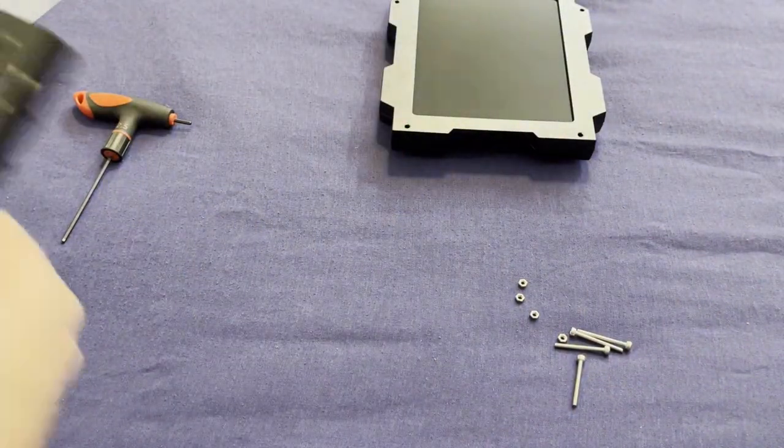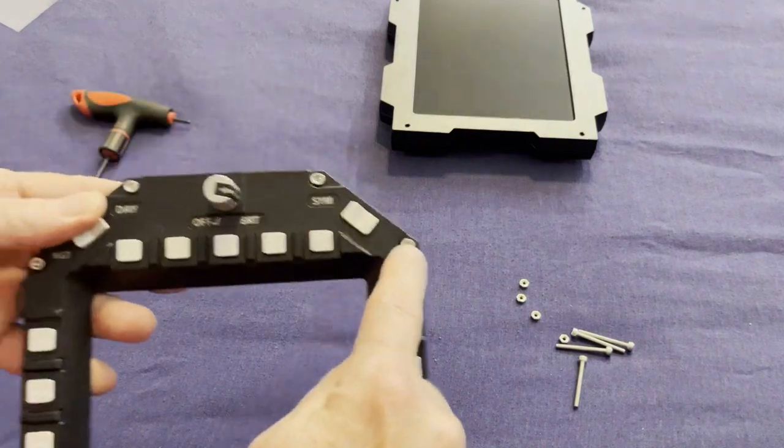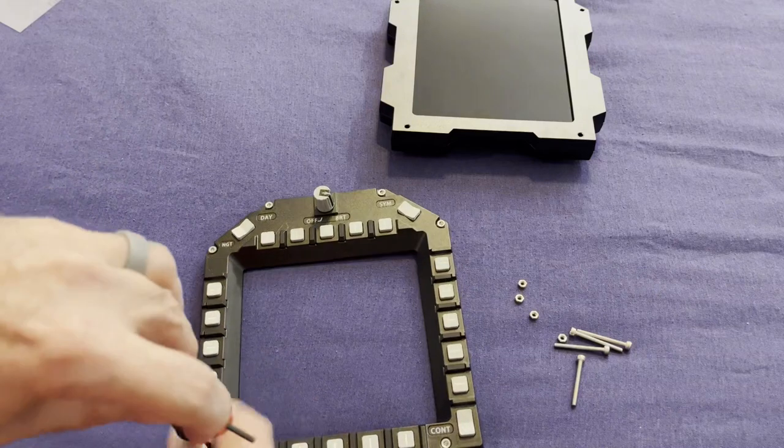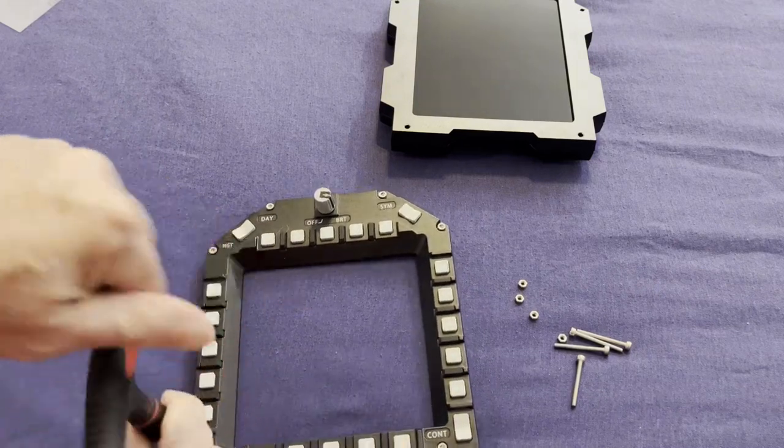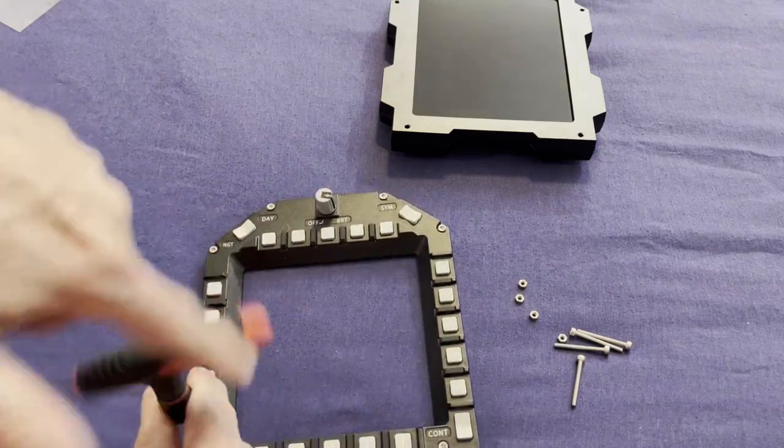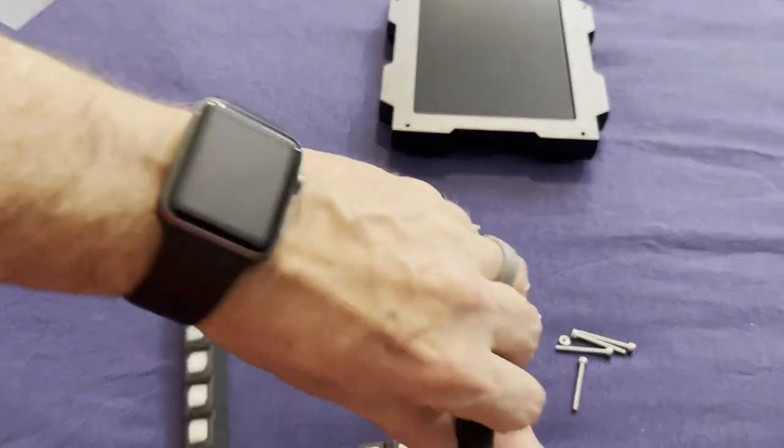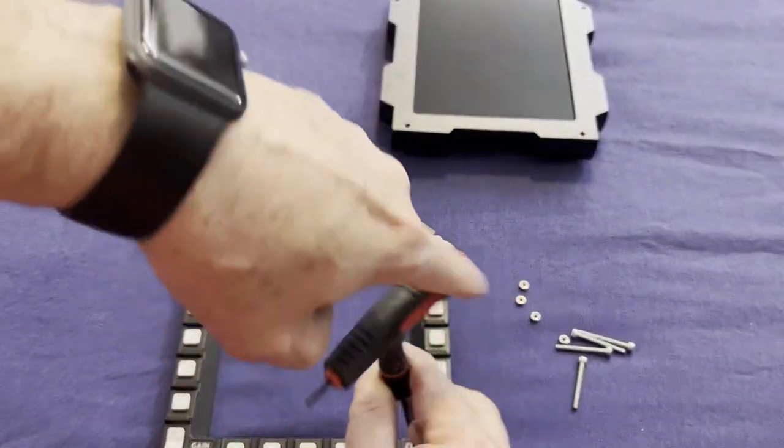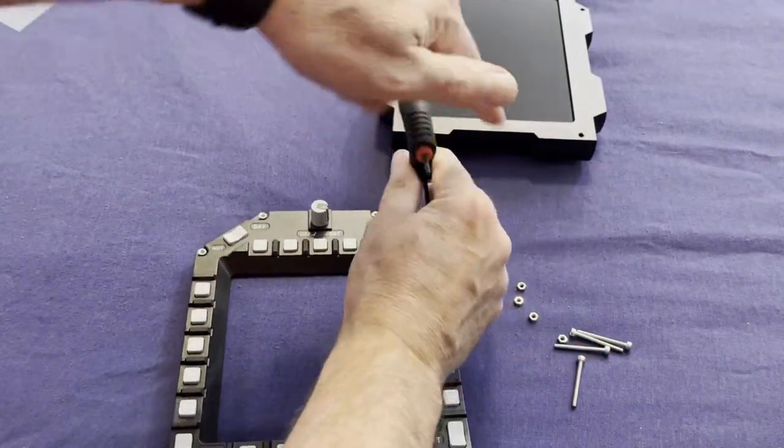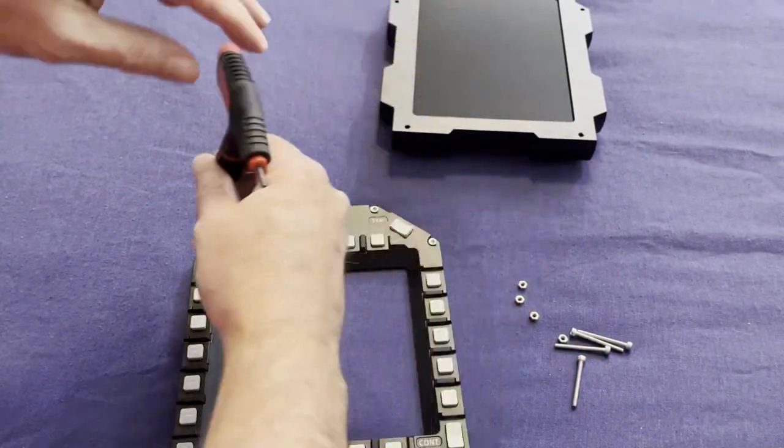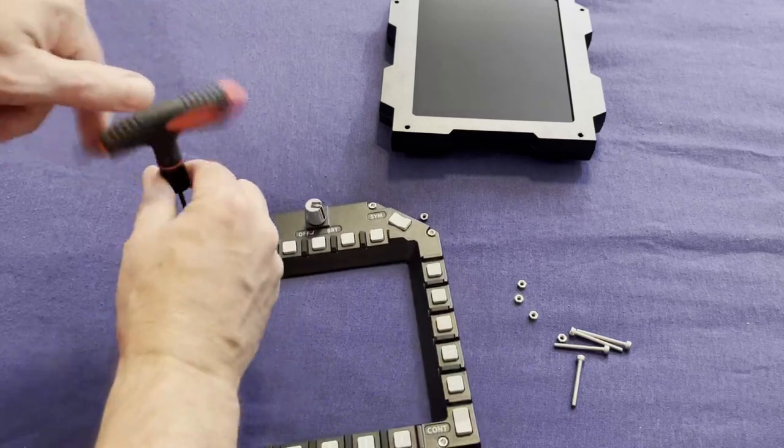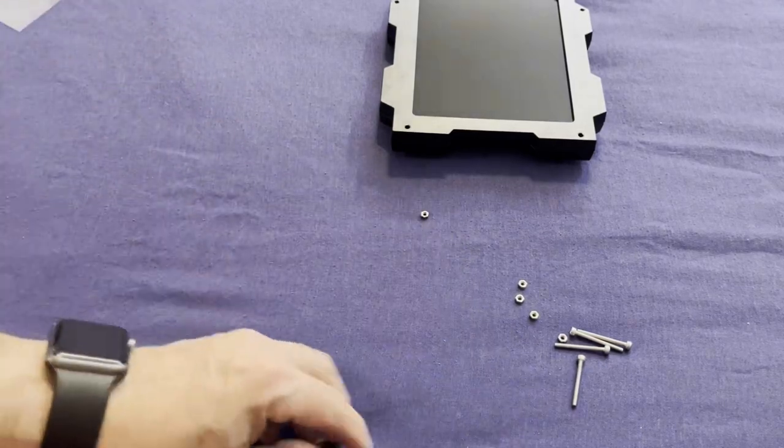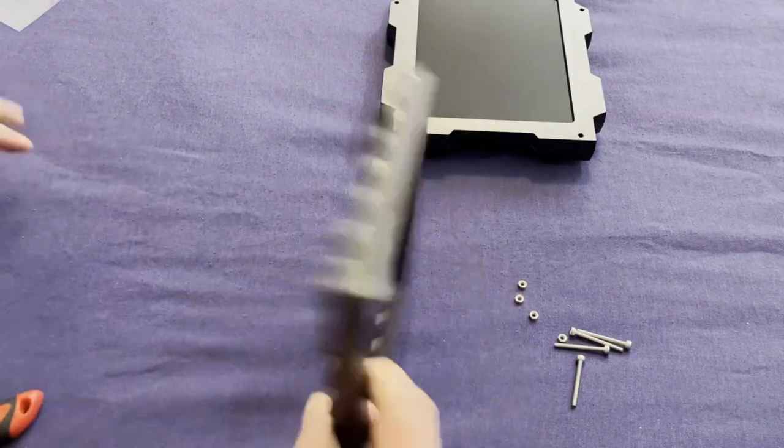But on the DDI, we've got the same four little nuts and bolts we've got to remove. So let's pull those. So these nuts and bolts we will not reuse.